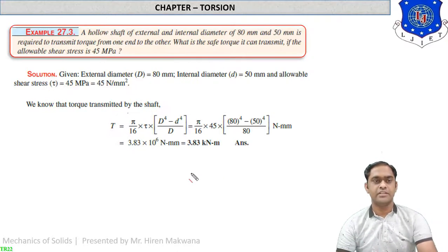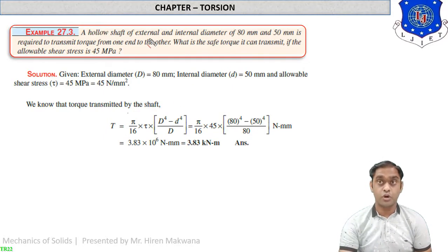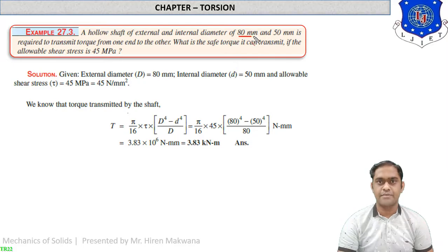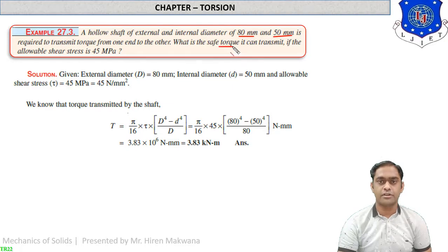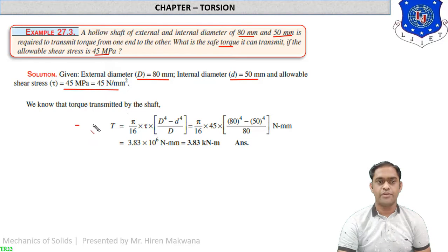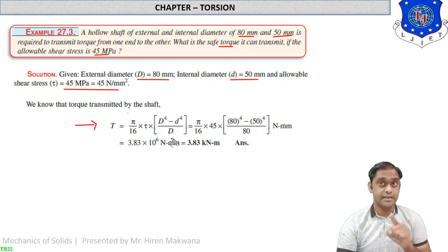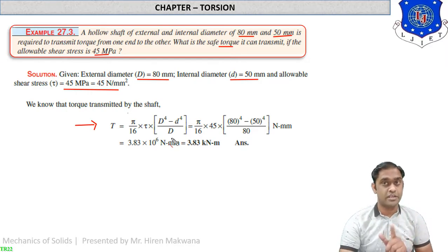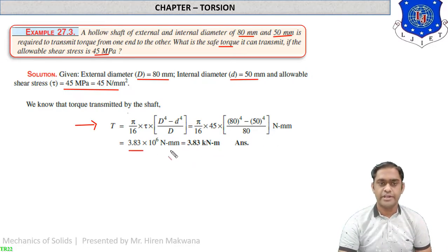Numerical 3: Hollow shaft. Here the formula changes to include external and internal diameters. External diameter D = 80 mm, internal diameter d = 50 mm. The shaft is required to transmit torque from one end to another. Find the safe torque if allowable shear stress τ = 45 MPa. Formula: T = (π/16) × τ × (D⁴ − d⁴) / D. Replace all values.